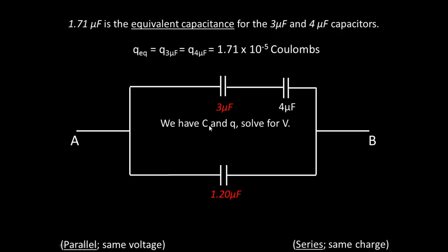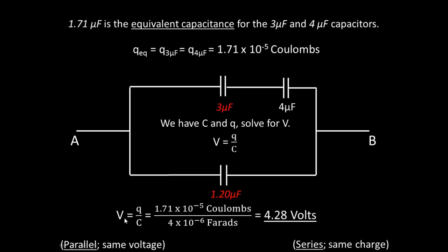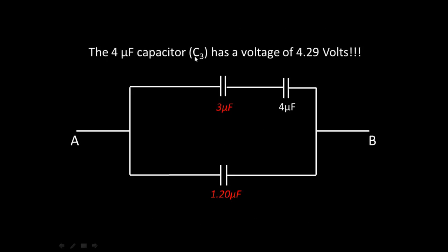We now have C and Q for the 4 microfarad capacitor, so we can solve for V. Using V equals Q over C: V equals 1.71 times 10 to the negative 5 coulombs divided by 4 times 10 to the negative 6 farads, which equals 4.28 volts. We've solved for the voltage across the 4 microfarad capacitor, C3 — it has a voltage of approximately 4.29 volts.